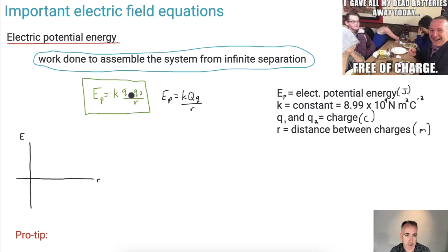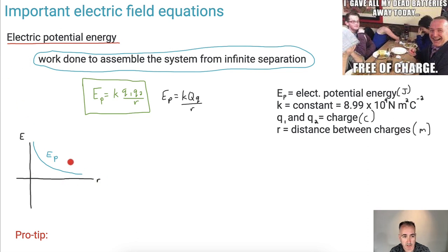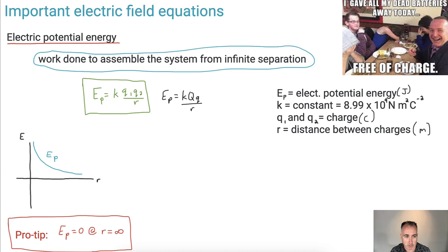So a graph of EP versus R has a 1/R shape. That means EP equals zero at R equals infinity. When you're at a really big value of R, you get zero potential energy. That also ties back to the definition: if it's work done to assemble it from infinite separation, and you already have it at infinite separation, there's no work done, so there should be no energy — zero.